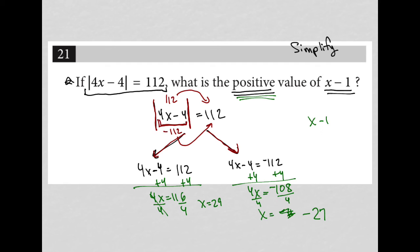But I want x minus 1. I want the positive value of x minus 1. So I'm going to use x equals 29 as my x value. And therefore, 29 minus 1 is equal to 28. So my correct answer here is 28.